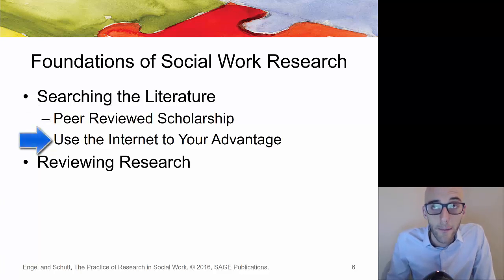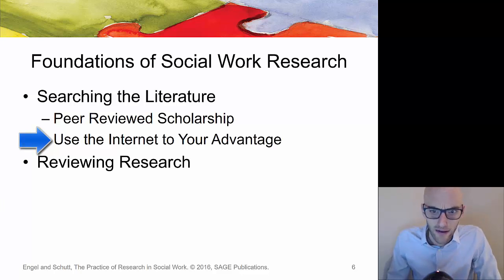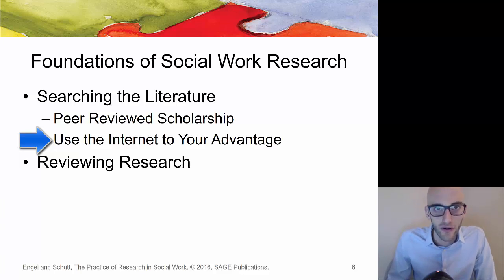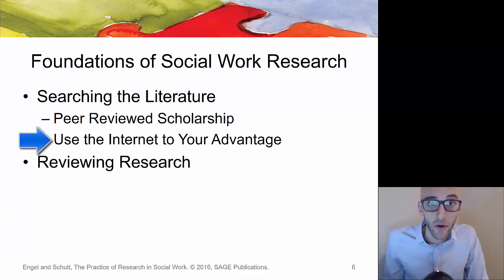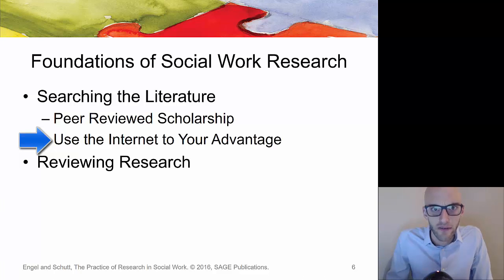Using the internet to your advantage: there are many databases where you can put in just about any keyword and find thousands of hits. Don't discount libraries or librarians — the UWM library is an incredible resource. In today's day and age, tools like Google Scholar and PsychInfo, along with a whole plethora of other options, make it good to know how to search for peer-reviewed articles.